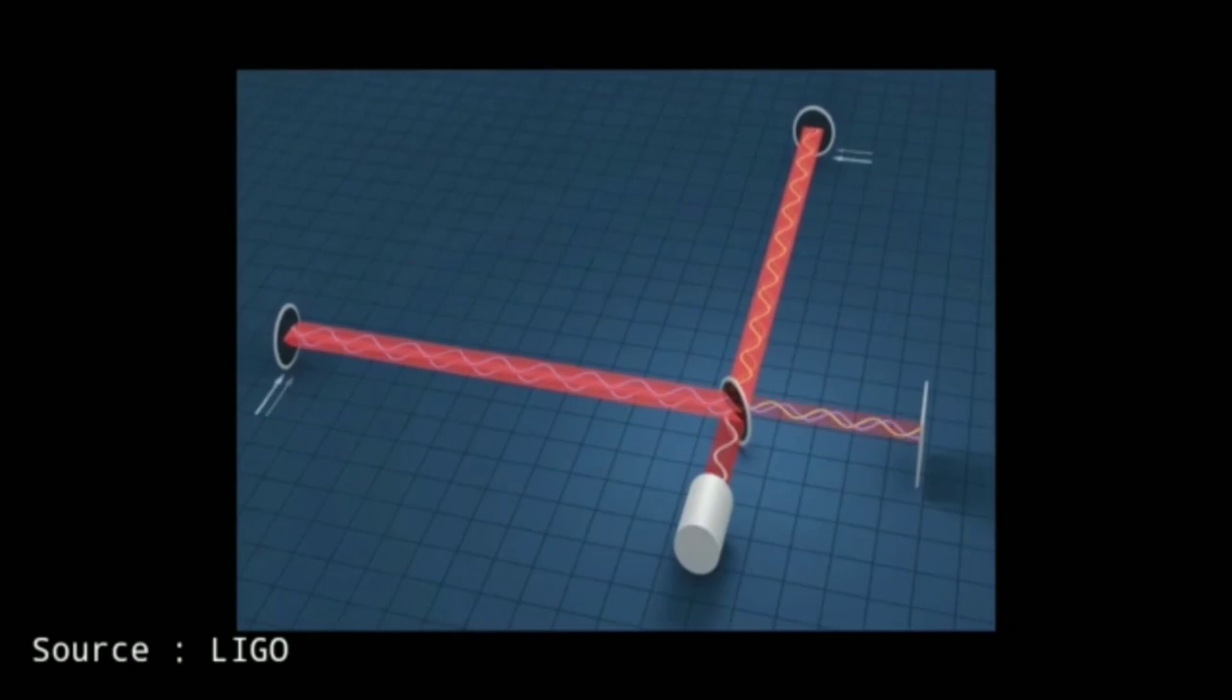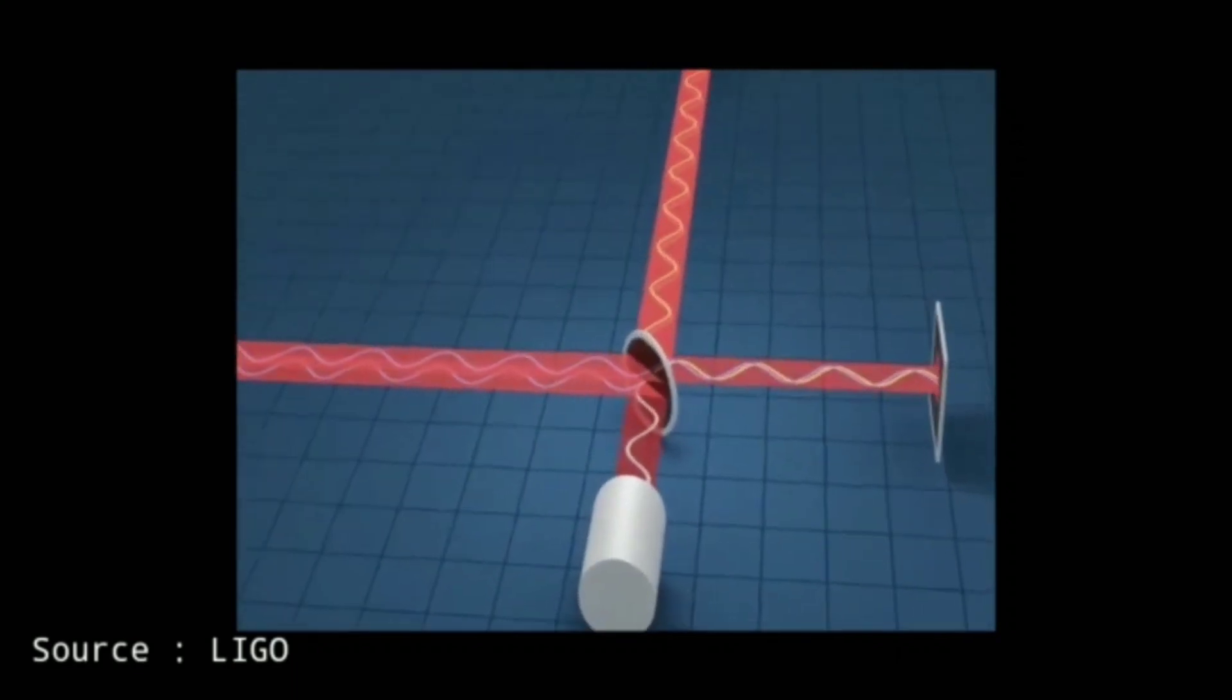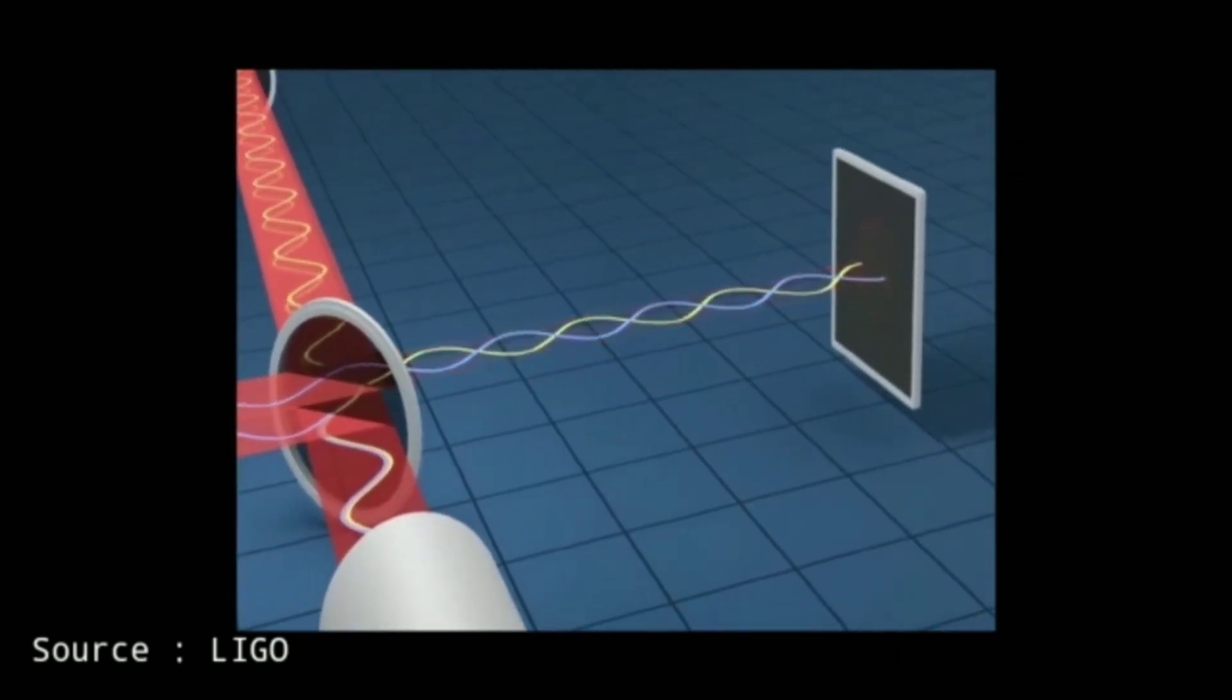Now come the gravitational waves. They stretch one arm then the other arm and make light come to the detector because the time it takes light to go to both parts is no longer exactly equal.